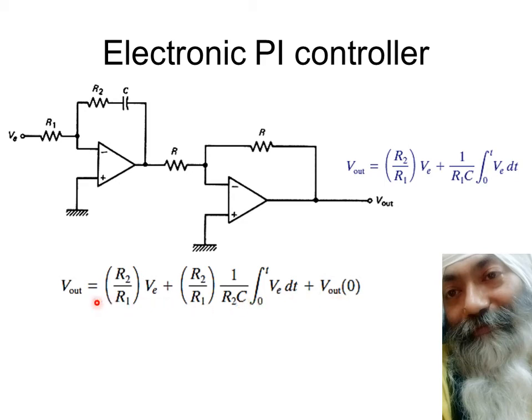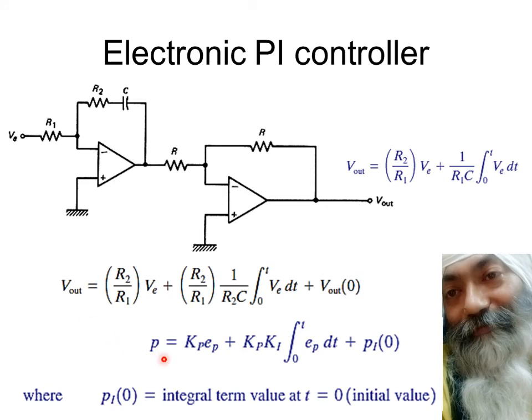If you want to compare this with the normal PI equation, the controller output is given by Kp into Ep plus Kp into Ki integral. You see that all these things are quite matching. The controller output is given by Kp, which means the role of Kp is being played by R2 upon R1. This can be taken as the proportional gain. Similarly this term, which was manipulated by multiplying by R2 and dividing by R2, becomes the Ki. But I would rather call it as Gi and Gp.